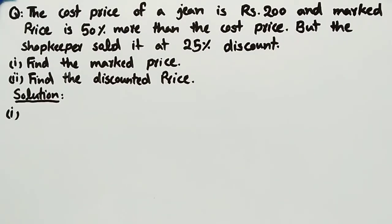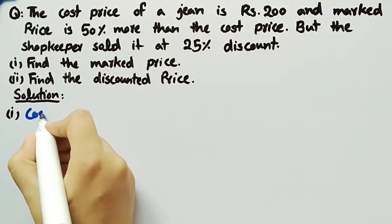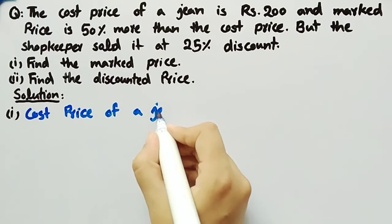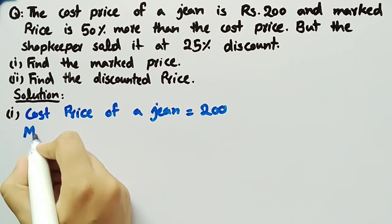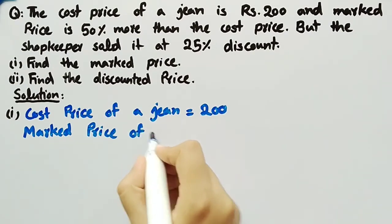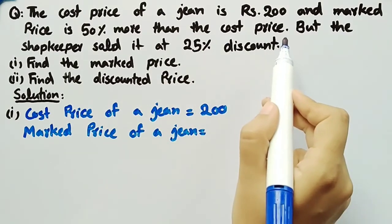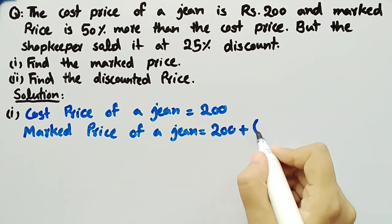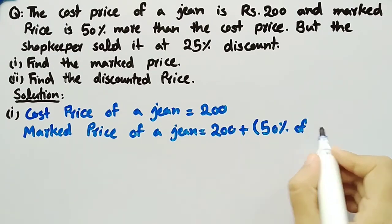Firstly, we will solve part 1 in which we have to find the marked price. It is given that cost price of a jean is equal to 200 and marked price of a jean is 50% more than the cost price. That is, it will be 200 plus 50% of cost price, that is, 50% of 200.